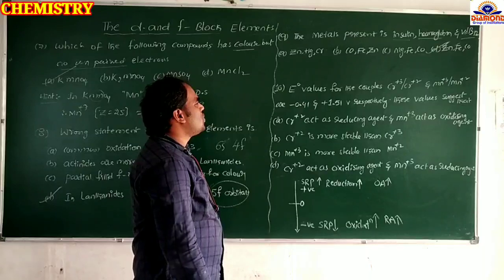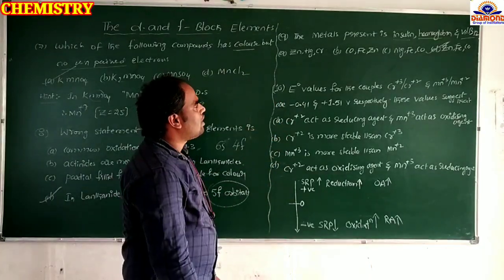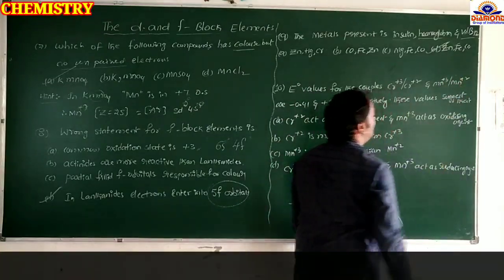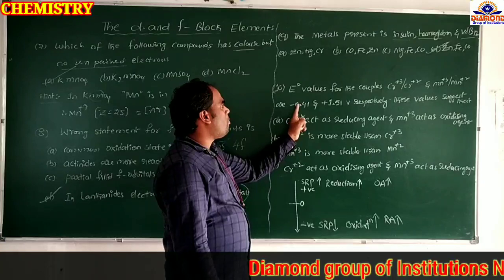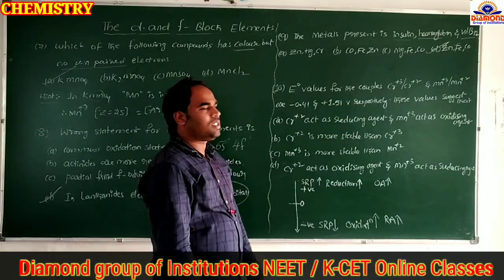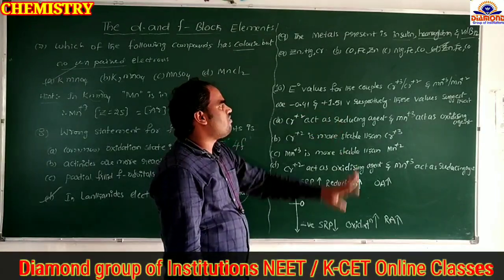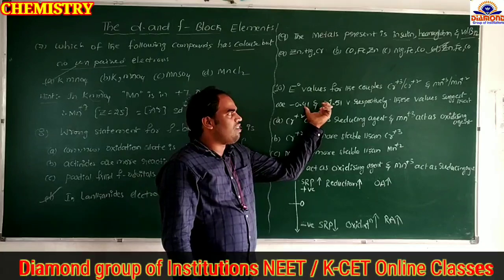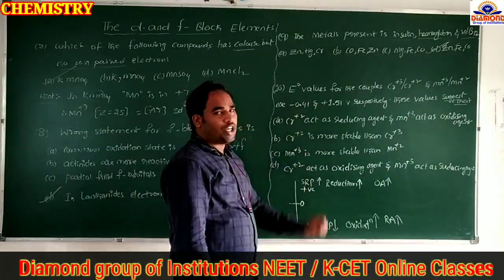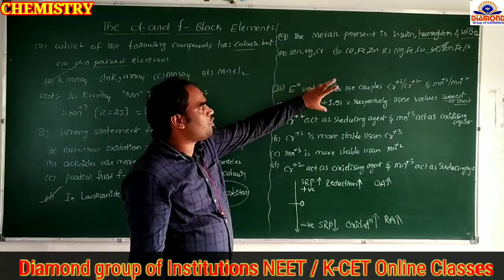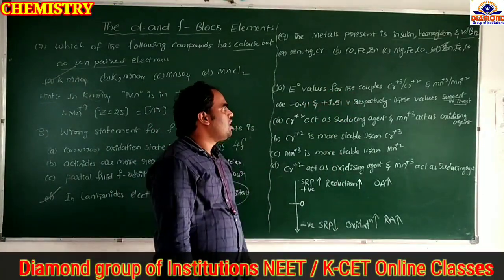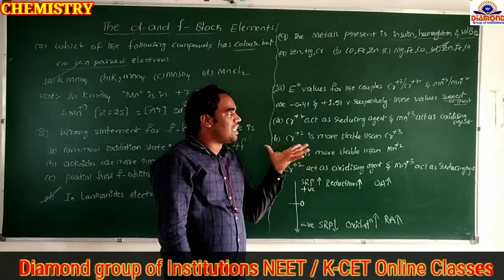Question 10: Standard electrode potential values for Cr³⁺/Cr²⁺ and Mn³⁺/Mn²⁺ couples are −0.41 V and +1.51 V respectively. Based on these values, what do they suggest? The key concept is: in the electrochemical series, more positive standard reduction potential means the element undergoes reduction and acts as an oxidizing agent; more negative value means the element undergoes oxidation and acts as a reducing agent.